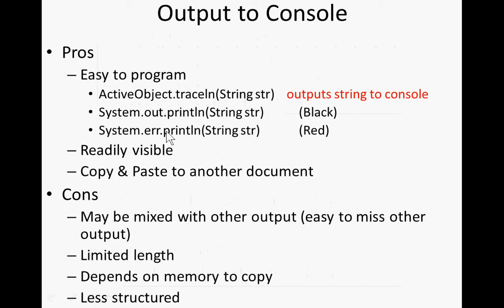We've seen the call to traceln — trace all by newline. You can give it a string, a set of characters in quotes, and it will output that string to the console. You can alternatively use the basic Java mechanisms: system.out.println, system.err.println. The error output occurs in red, which is nice for highlighting it. The console output is readily visible, and you can cut and paste to another document. The cons are that it's limited in length, can be mixed up with other output, depends on your memory, and it's less structured.